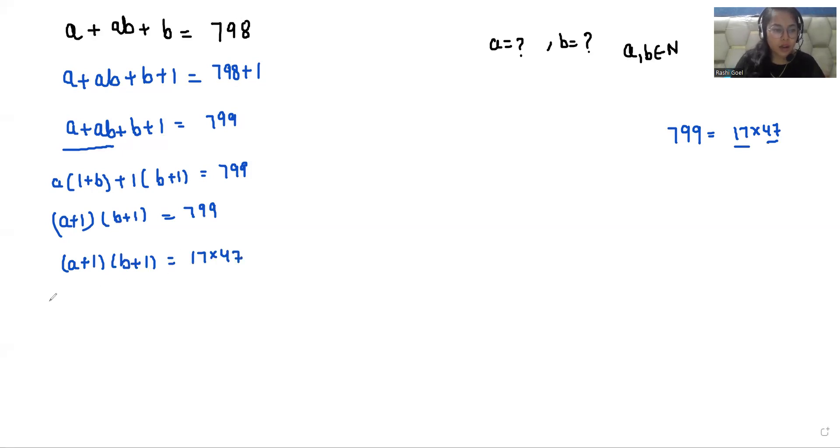Now on comparing, I get two cases. Case 1: either A plus 1 equals 17 or B plus 1 equals 47. From here, the value of A is 16 and the value of B is 46. In another case, Case 2, the value of A is 46 and the value of B is 16.